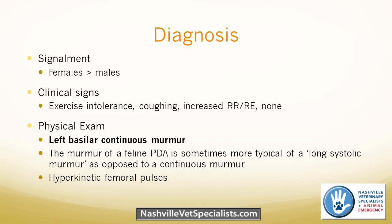In cats, we don't see PDAs as often, and when we do, they don't have the typical washing machine or continuous murmur. More often theirs is just a long systolic murmur that can be difficult to differentiate when their heart rate is over 200. Another finding on physical exam is hyperkinetic femoral pulses — very strong but very quick. That's due to increased cardiac output initially, but it runs off into the ductus, resulting in a strong but very short-lived pulse pressure.